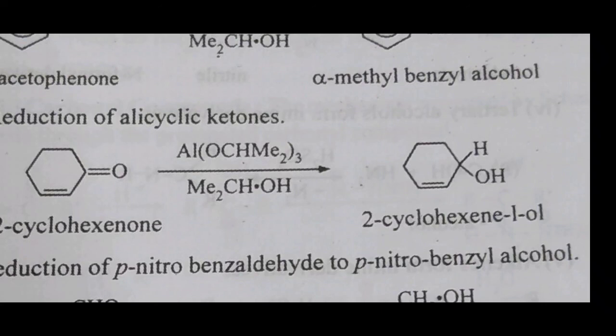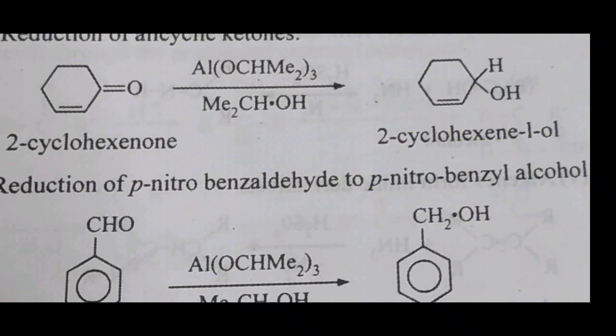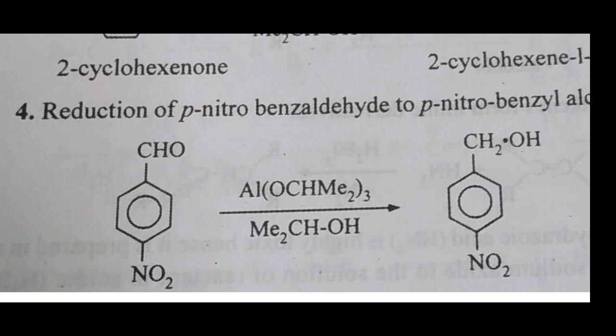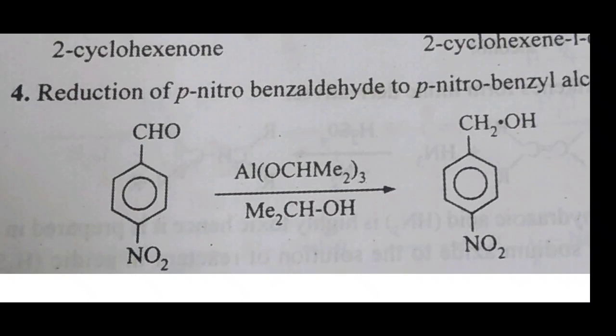The fourth application of MPV reduction is the reduction of para-nitrobenzaldehyde. At the benzene ring an attached CHO group makes it a benzaldehyde, and at position 4 a nitro group is present — hence para-nitrobenzaldehyde. In the presence of aluminum isopropoxide, only the CHO group is converted to CH₂OH and the NO₂ group remains as it is, giving para-nitrobenzyl alcohol. This confirms that MPV reduction is mostly useful for reduction of aldehyde and ketone groups. Thank you for listening.